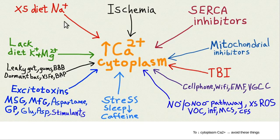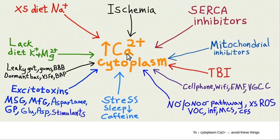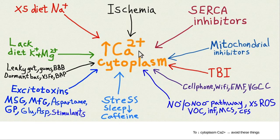That includes high dietary sodium, because it dissipates the sodium plasma membrane gradient, making you less able to pump out calcium via the NCX exchanger. Excess dietary sodium leads to increased cytoplasmic calcium. And just like the Lord of the Rings joke — one ring to control them all — calcium is the ion that controls everything inside a cell. The most important things a cell does are typically switched on by increased cytoplasmic calcium.